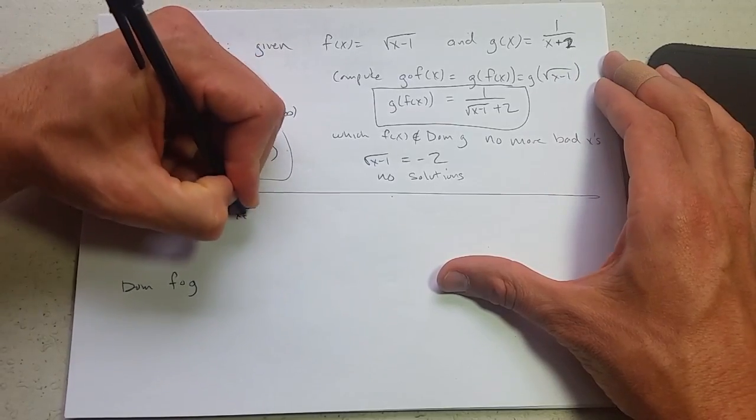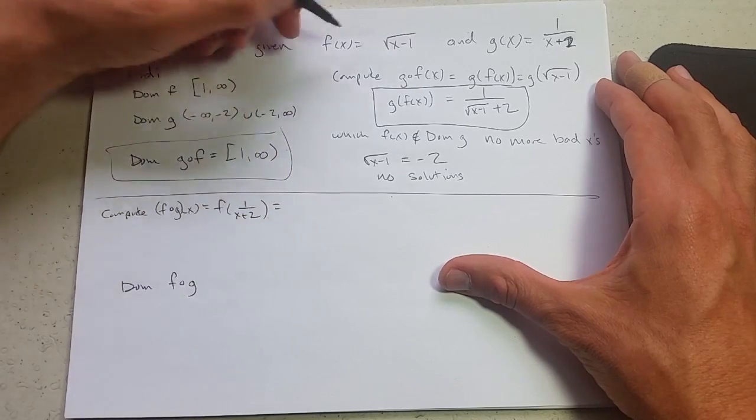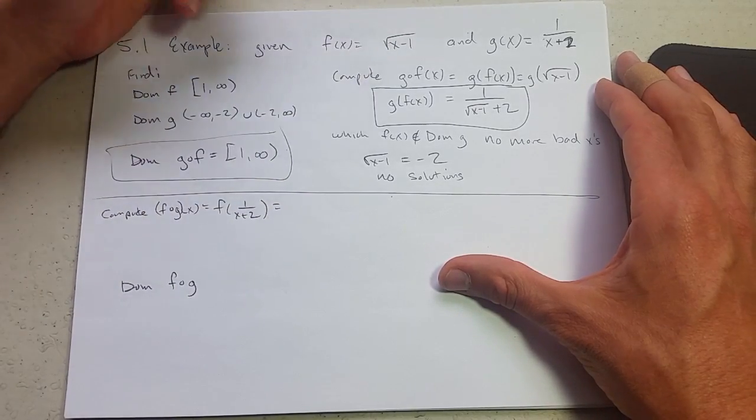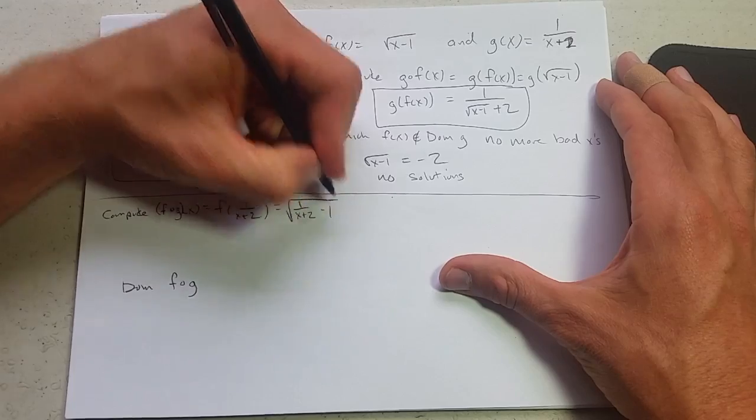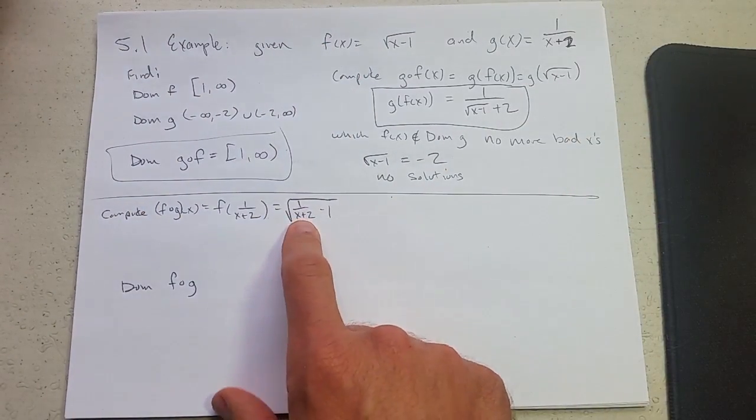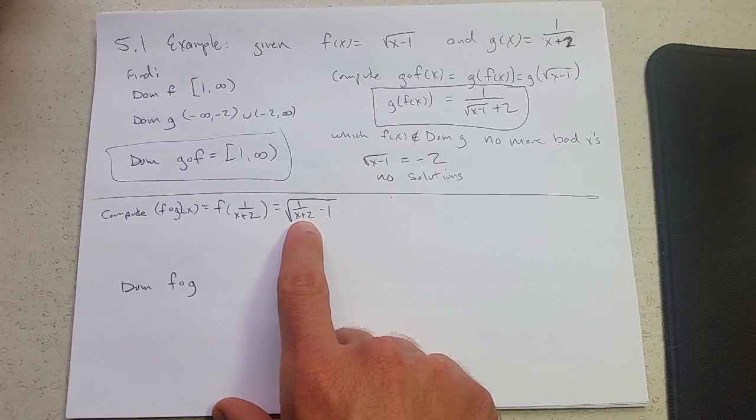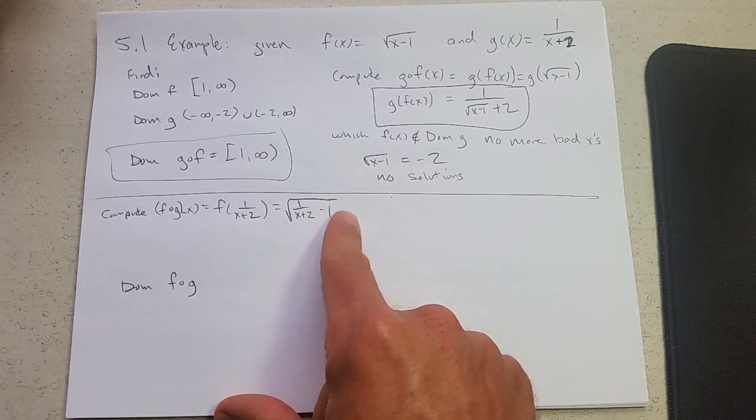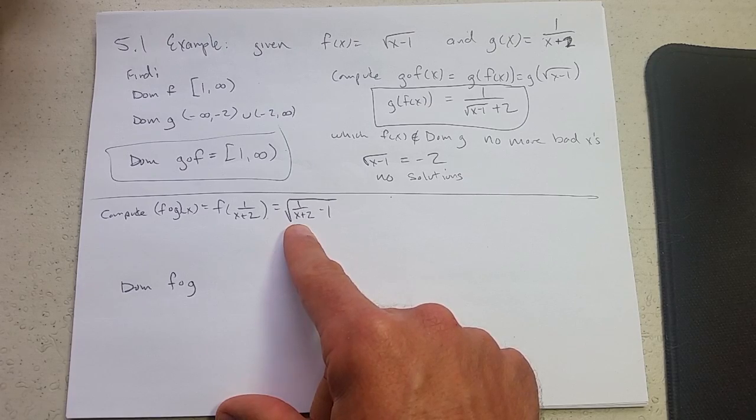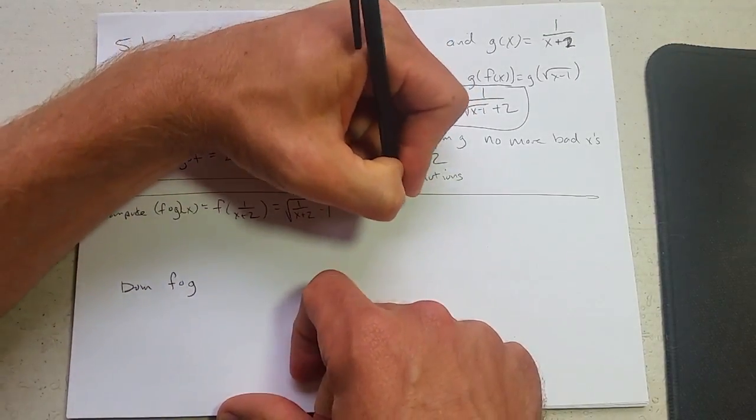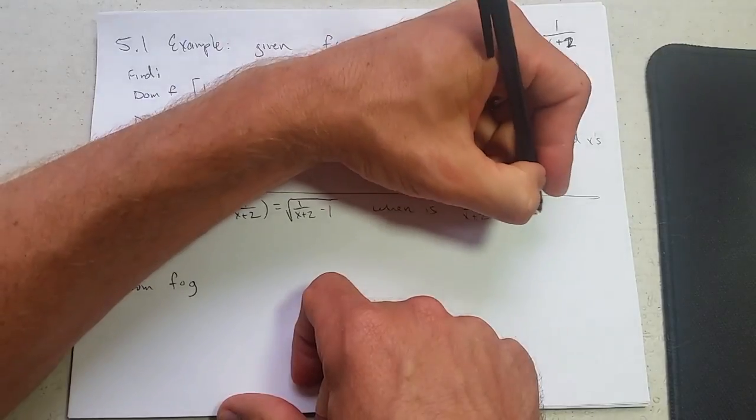So what is g of x? 1 over x plus 2. Now we got to be careful. We're plugging this into where I see x up here for f of x. We can already see negative 2 is going to be bad. We'll be divided by 0 right here. So we don't want to do that. And we also have to make sure this whole thing is positive.